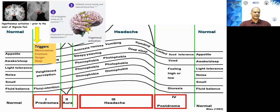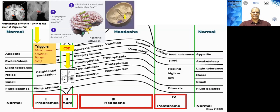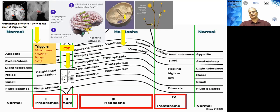Once hypothalamic activation occurs, it triggers cortical spreading depression — a neuronal wave of depolarization that propagates very slowly, over two to three minutes, across the cortex. This is the reason why the aura of migraine occurs. Finally, this cortical spreading depression activates the trigeminal ganglia, which causes release of various neurotransmitters that produce the headache.